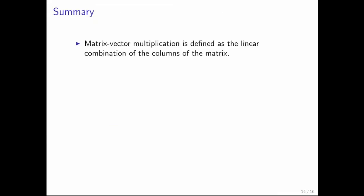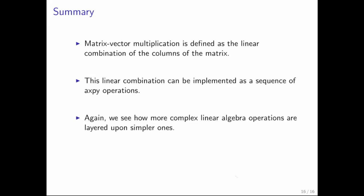So, in summary, matrix vector multiplication was inherently defined as a linear combination of the columns of the matrix. So, it's not surprising that we can look at the algorithm that way. Linear combinations themselves can be implemented as a sequence of AXP operations. We looked at that briefly in week one, and we're now revisiting that in week three. And again, we noticed that we have simpler operations like dot and AXP, and with that, we can express more complex algorithms for operations like matrix vector multiplication.